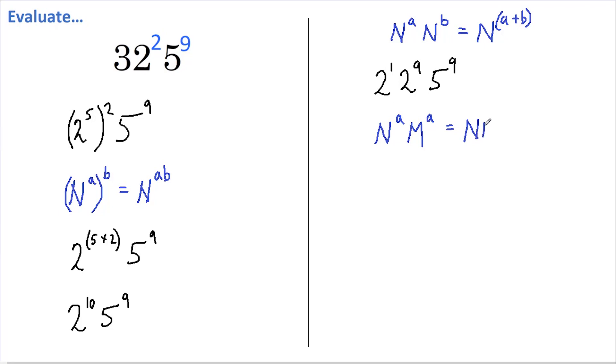This therefore becomes 2¹, which I'm just going to write as 2, multiplied by (2×5)⁹, which equals 2 × 10⁹.